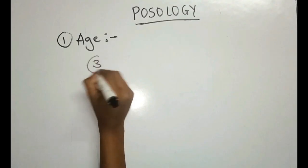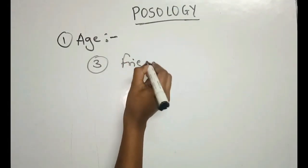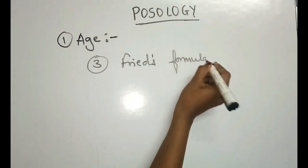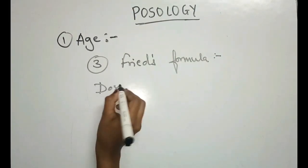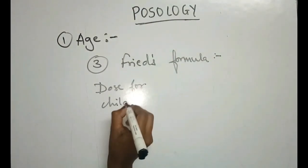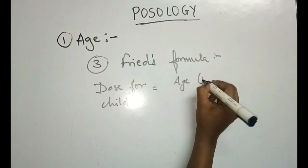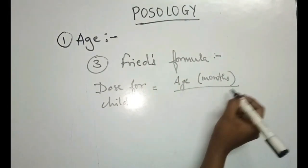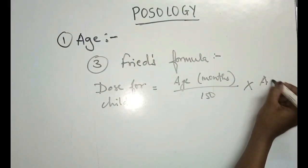The third formula is Fried's formula. The dose for a child is equal to age in months divided by 150, multiplied by the adult dose.